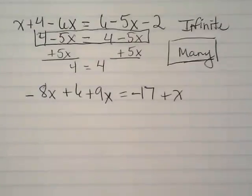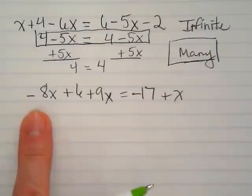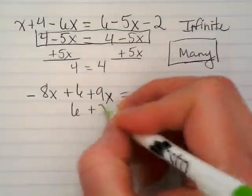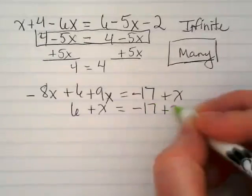Before I can try to solve for the x, I need to simplify. I have like terms over here. A negative 8x and a positive 9x is going to simplify to just 1x. So we're going to say 6 plus x. And then I have negative 17 plus x.